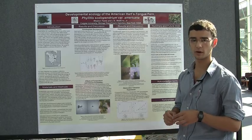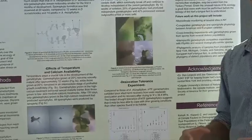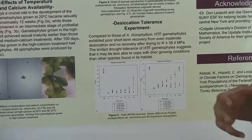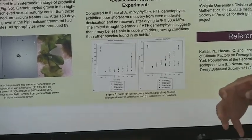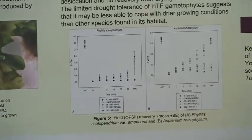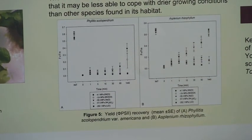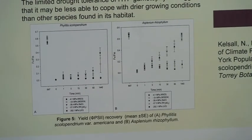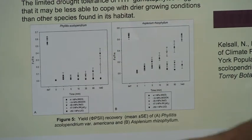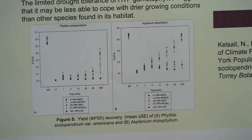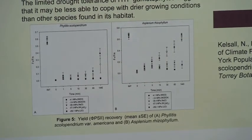I did some physiological work on the desiccation tolerance of the gametophyte, which I found to be important given that these habitats have been opened up in recent years for development of trails, which is going to decrease the humidity in these sites. I compared it to Asplenium rhizophyllum, which early 20th-century work has shown to be desiccation tolerant. My work confirmed that Asplenium rhizophyllum is extremely desiccation tolerant, while Phyllitis scolopendrium is not, suggesting it may be less capable than some other species to cope with drying habitats.